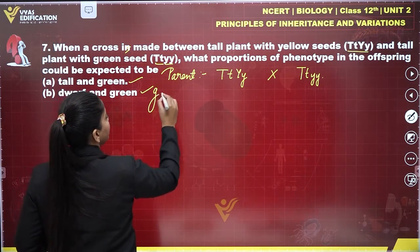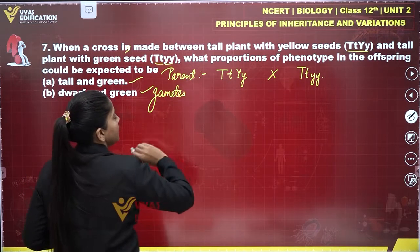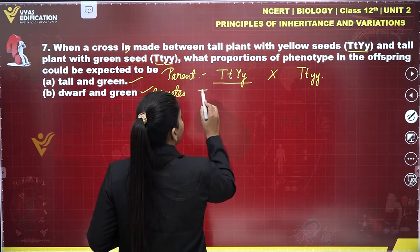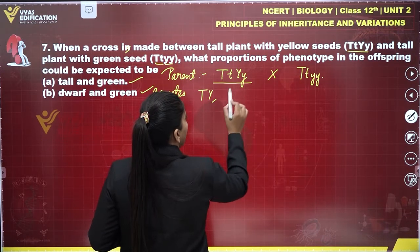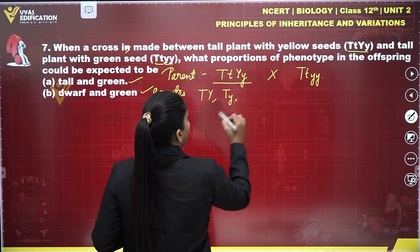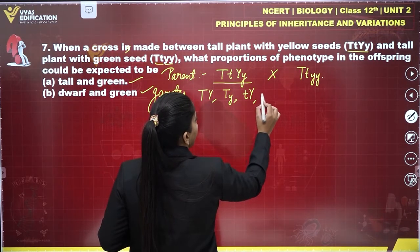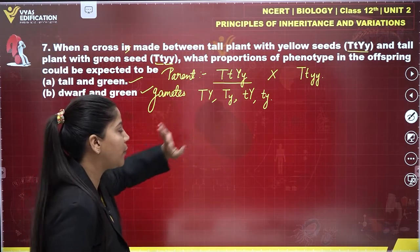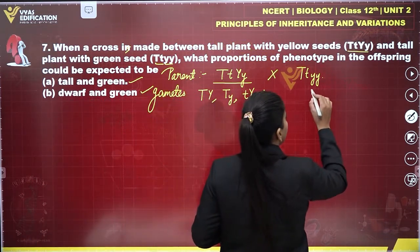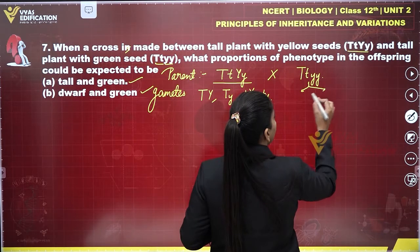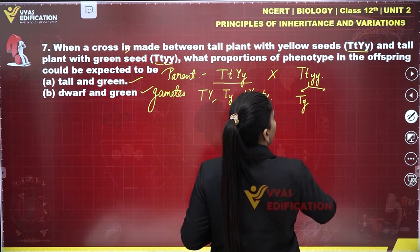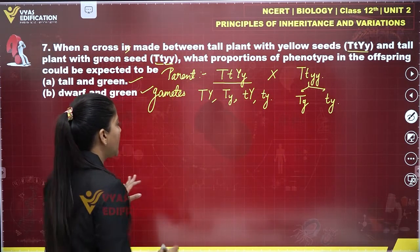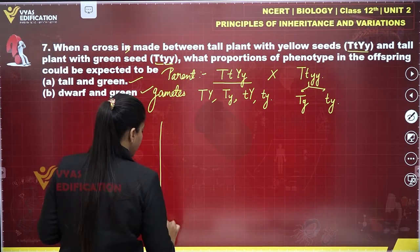They are going to make gametes. Different types of gametes will be obtained from the first parent: TY, Ty, tY, and ty. The second parent over here is going to make only two types of gametes: Ty and ty.